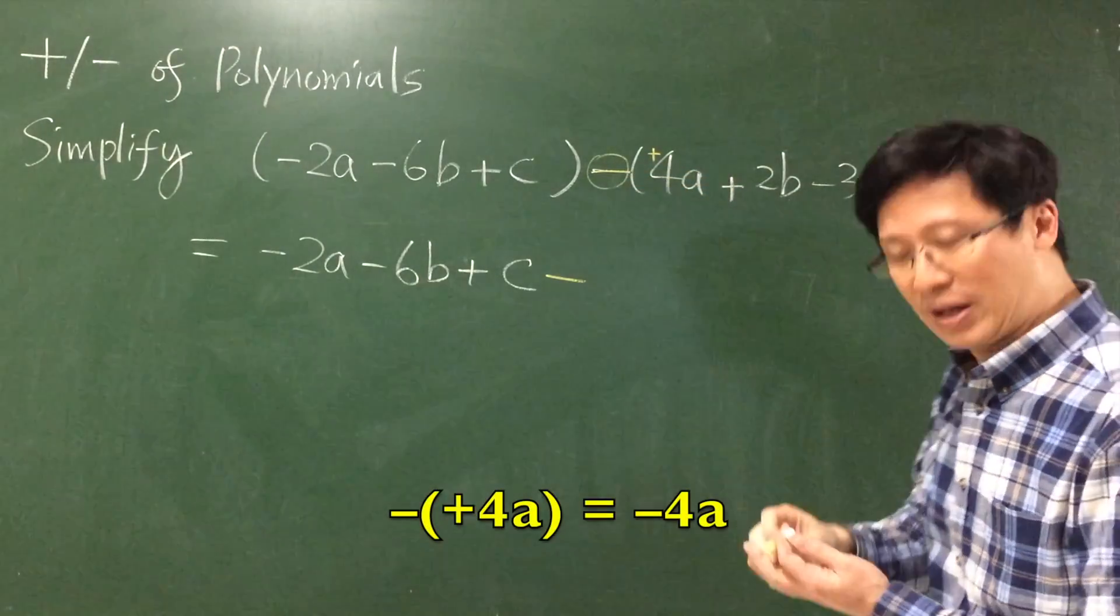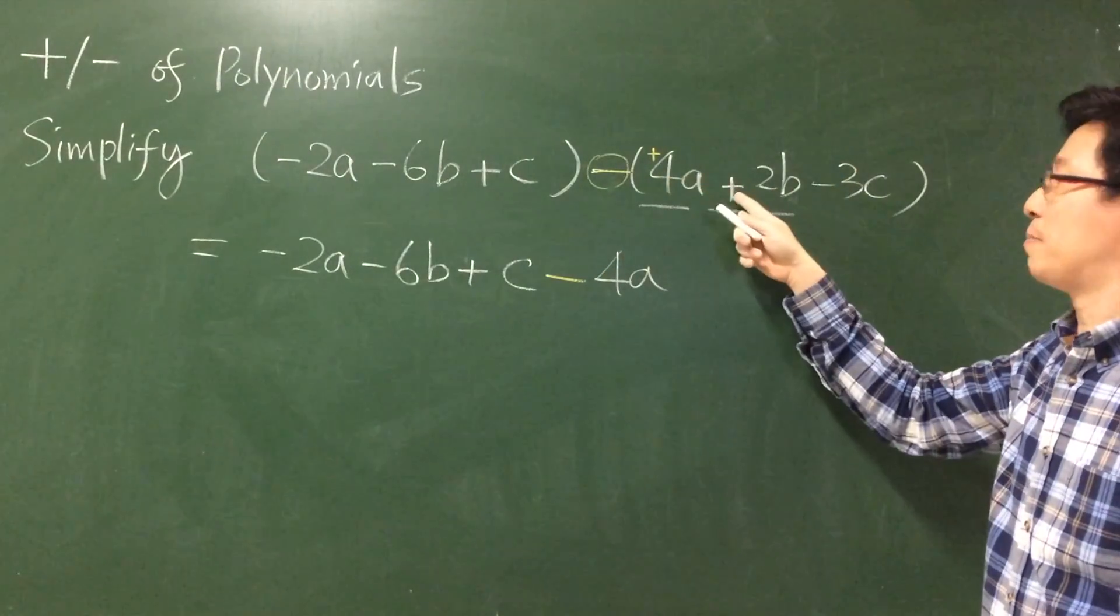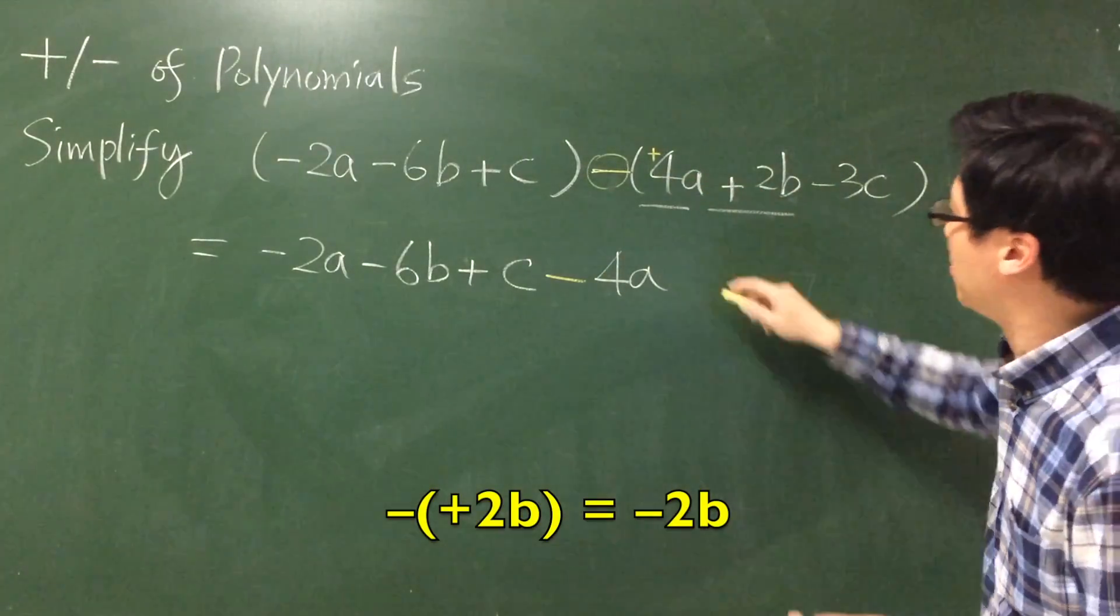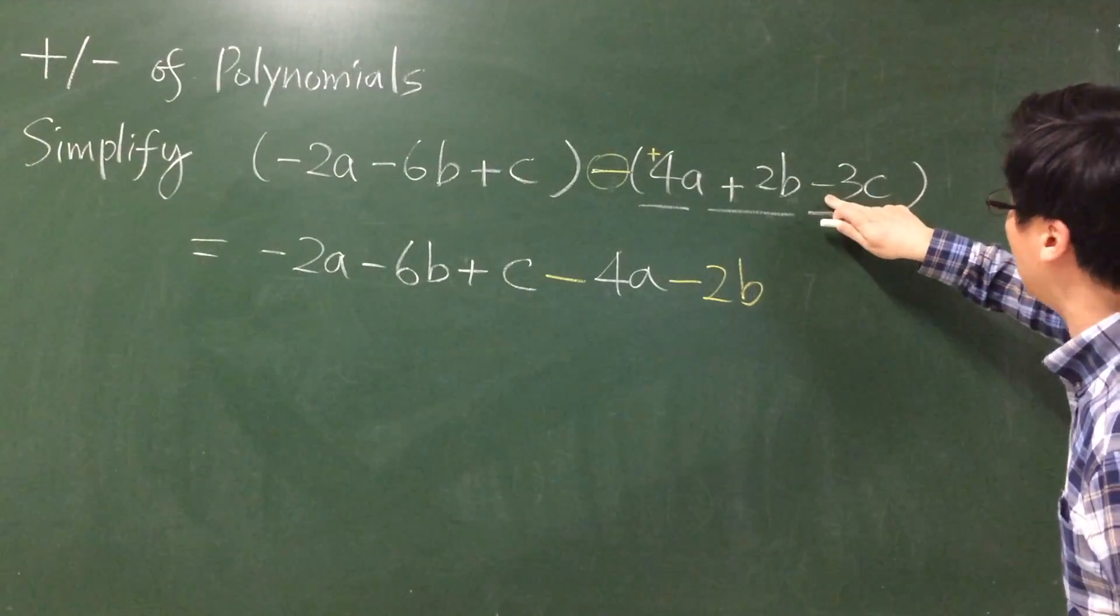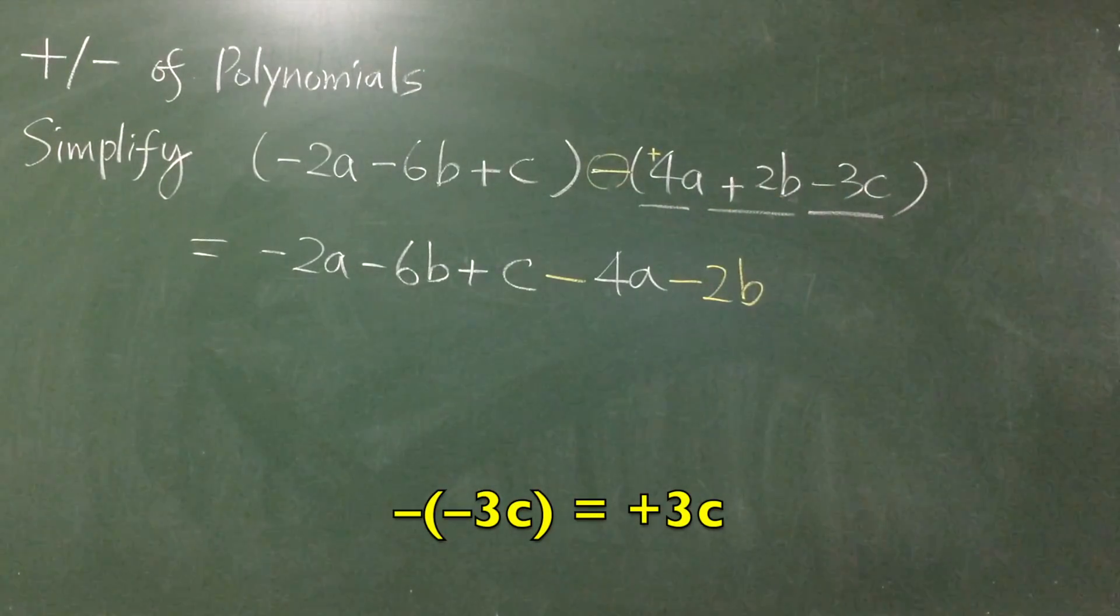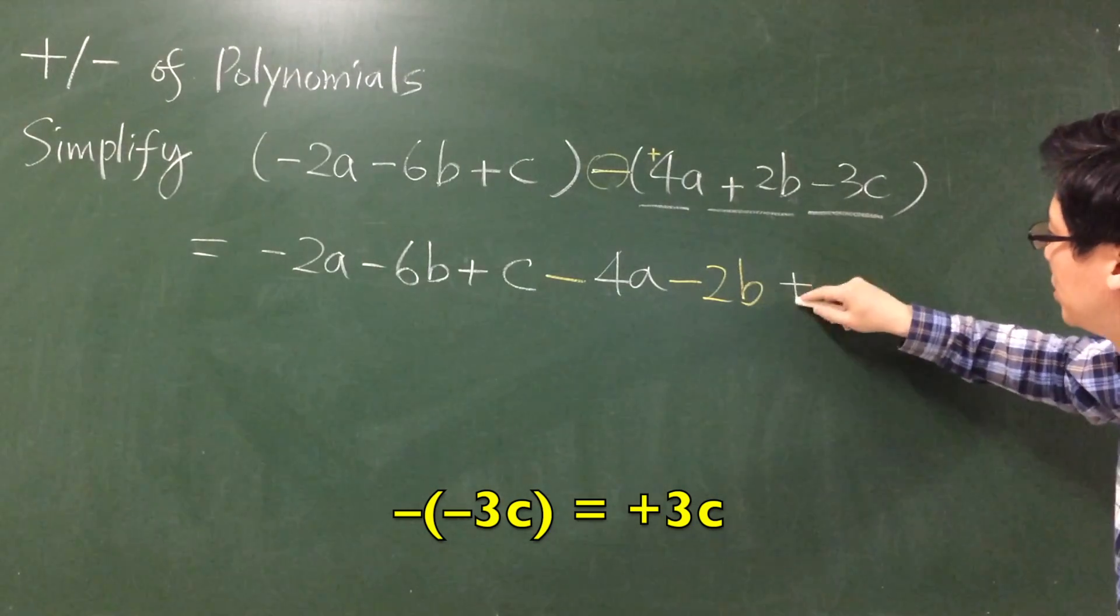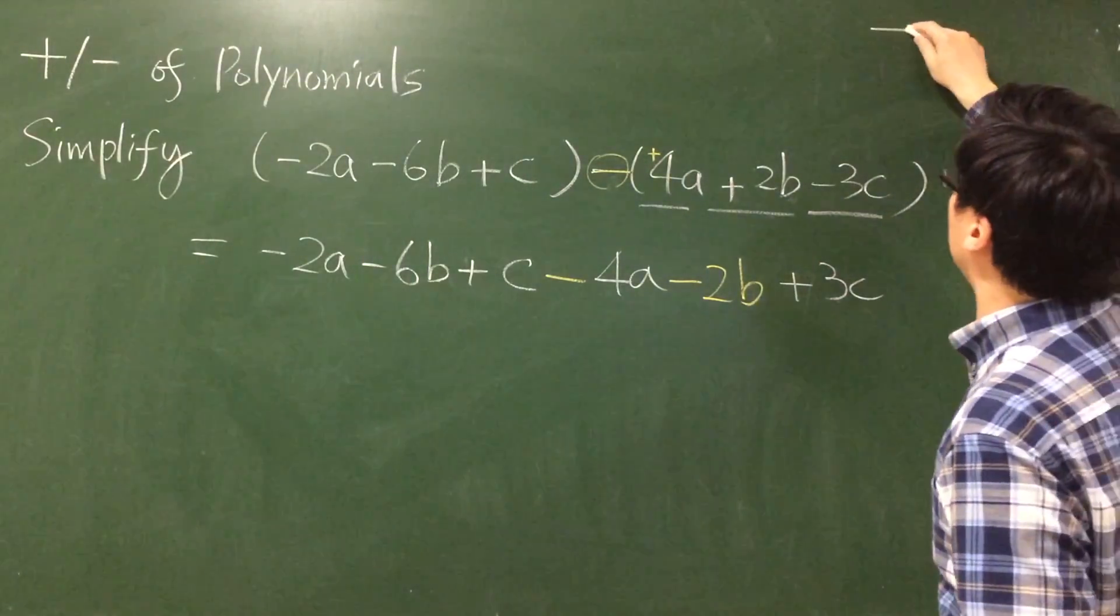Finally you come up with a negative 4a minus plus 2b, you get minus 2b, and then the last negative 3c minus negative 3c, you get positive 3c.